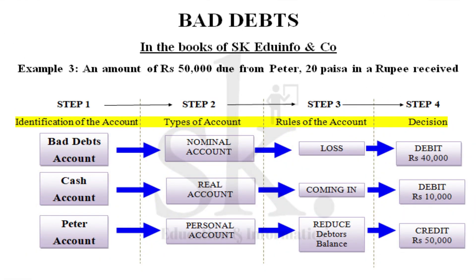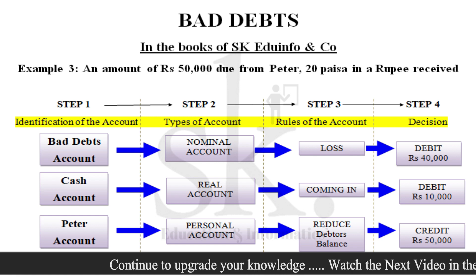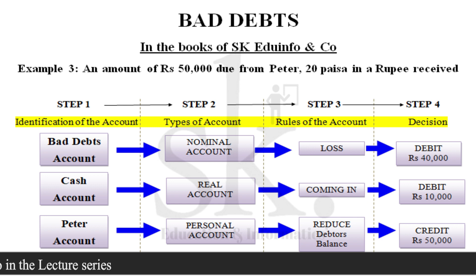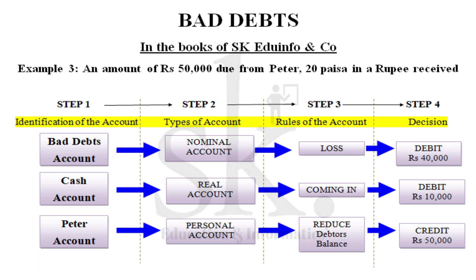Example three is similar to example two but worded differently: an amount of rupees 50,000 due from Peter — 20 paisa in a rupee received. This is a common examination statement. If one rupee is the total claim and you get 20 paisa, that means 20 percent. So if your total claim is 50,000, you are going to get 10,000. The journal entry structure remains the same: bad debt account debited with 40,000, cash account debited with 10,000, and Peter's account credited with 50,000 as the debtor's balance decreases.